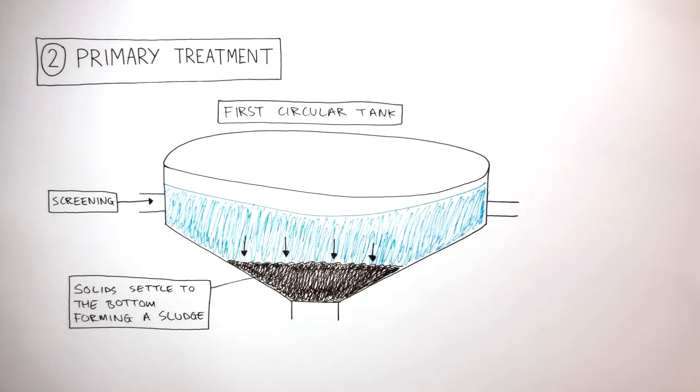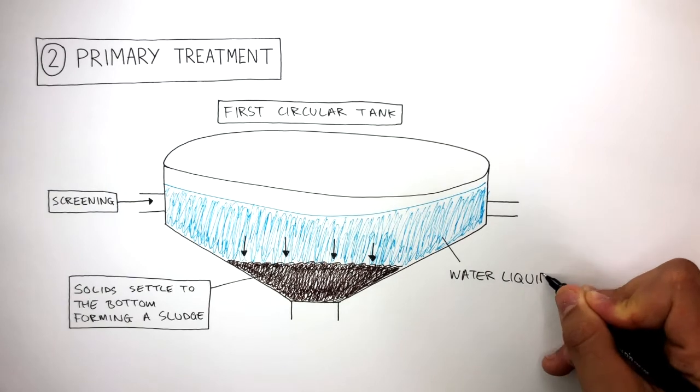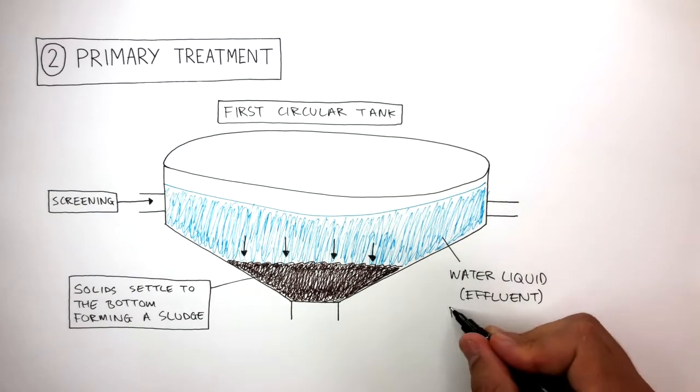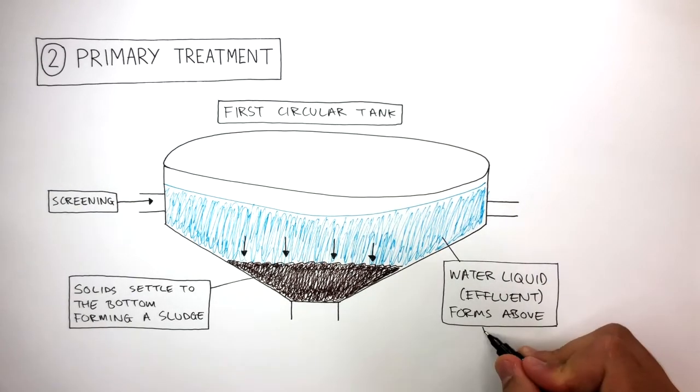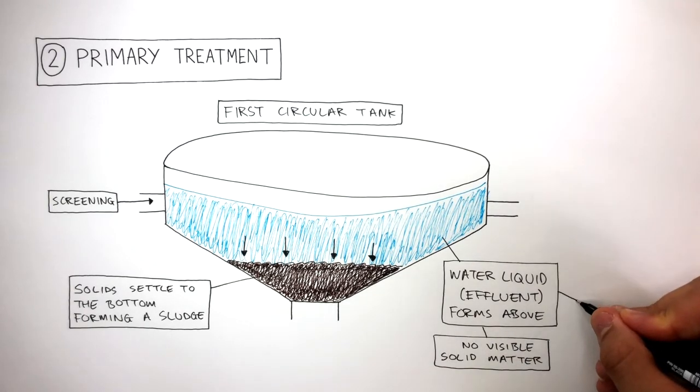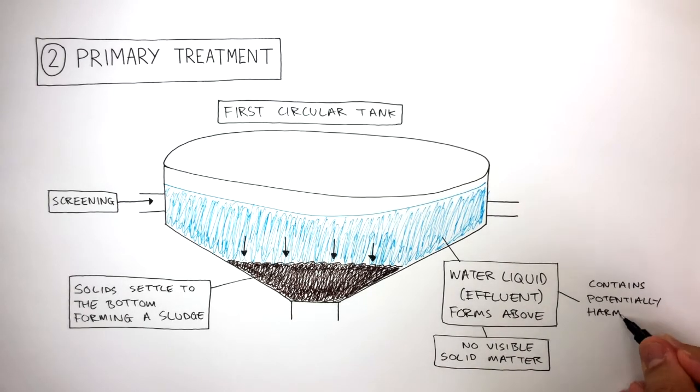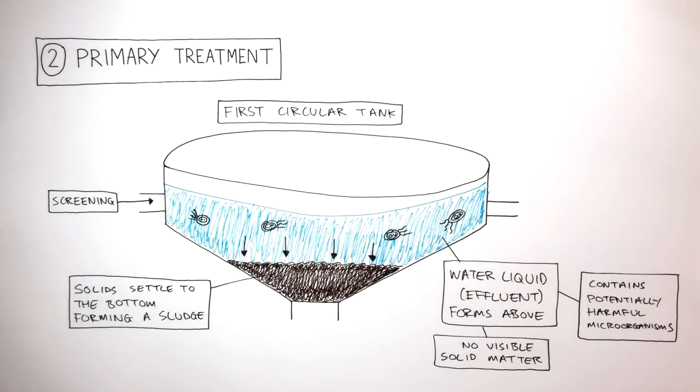The solid settling to the bottom forming the sludge is known as primary sedimentation, as this is the first major sedimentation in sewage treatment. This watery liquid effluent forms above, and although there is no visible solid matter, this effluent contains potentially harmful microorganisms which we cannot see with the naked eye.